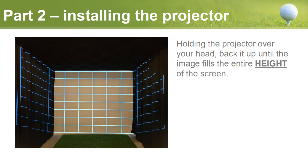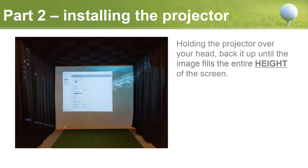Once you find the right projector and are ready to set it up, you want the image to take up the entire height of the screen — forget about the width for now. I used a test pattern on my projector and backed it up until the image fills the entire height of the screen. In Windows you can see the width is way too wide — my desktop icons are on the curtains to the left and right. That's fine at this stage; set it up, back it up as needed, and that's where you'll install your projector.